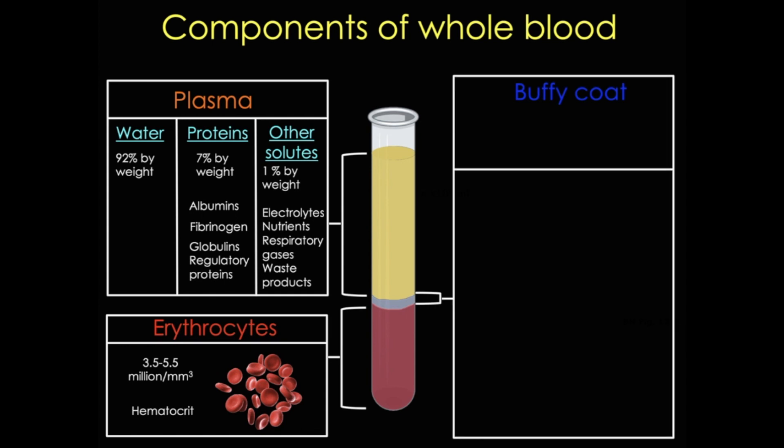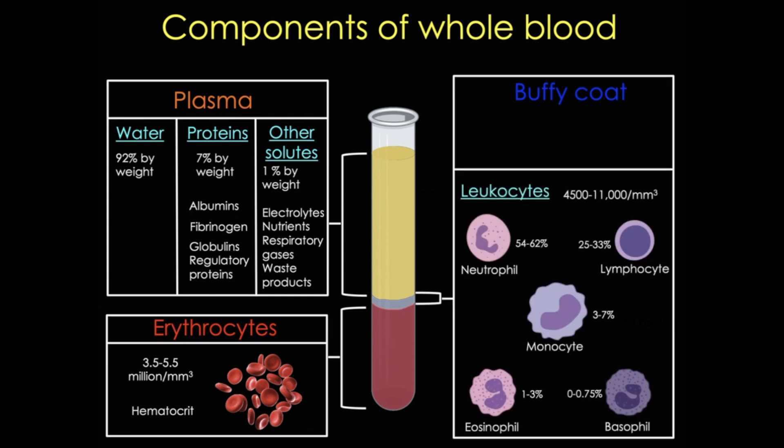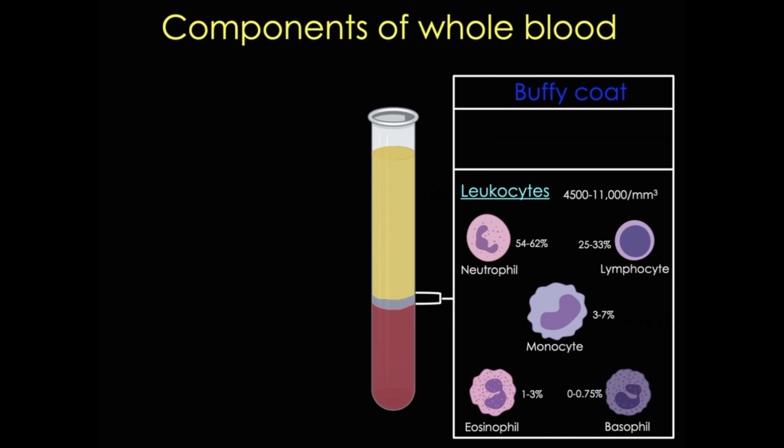This layer contains the leukocytes, or white blood cells, which are the body's chief defenses against infection, and platelets, which are critical for coagulation. We'll start with leukocytes.